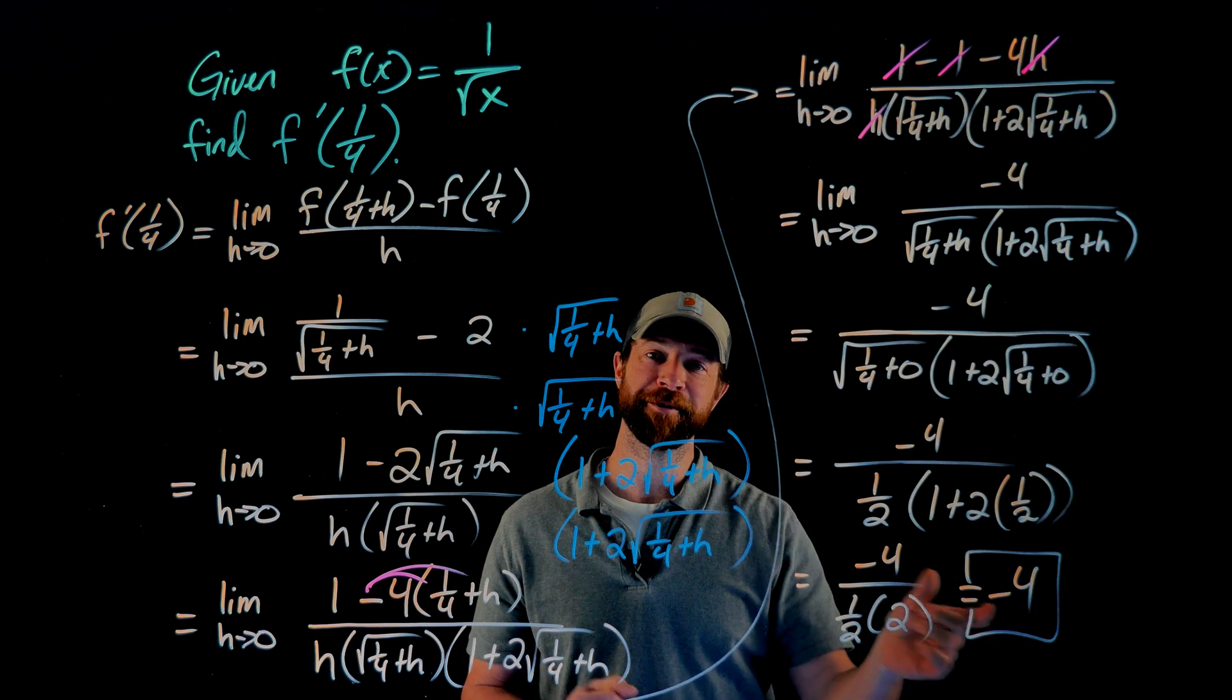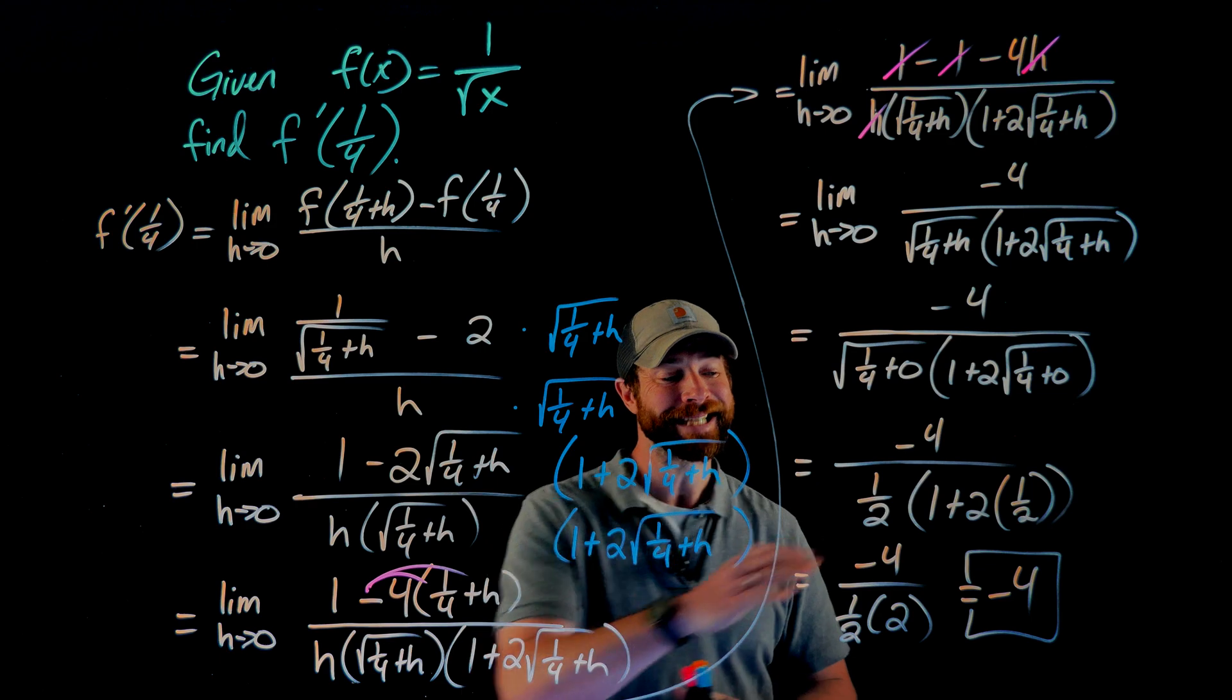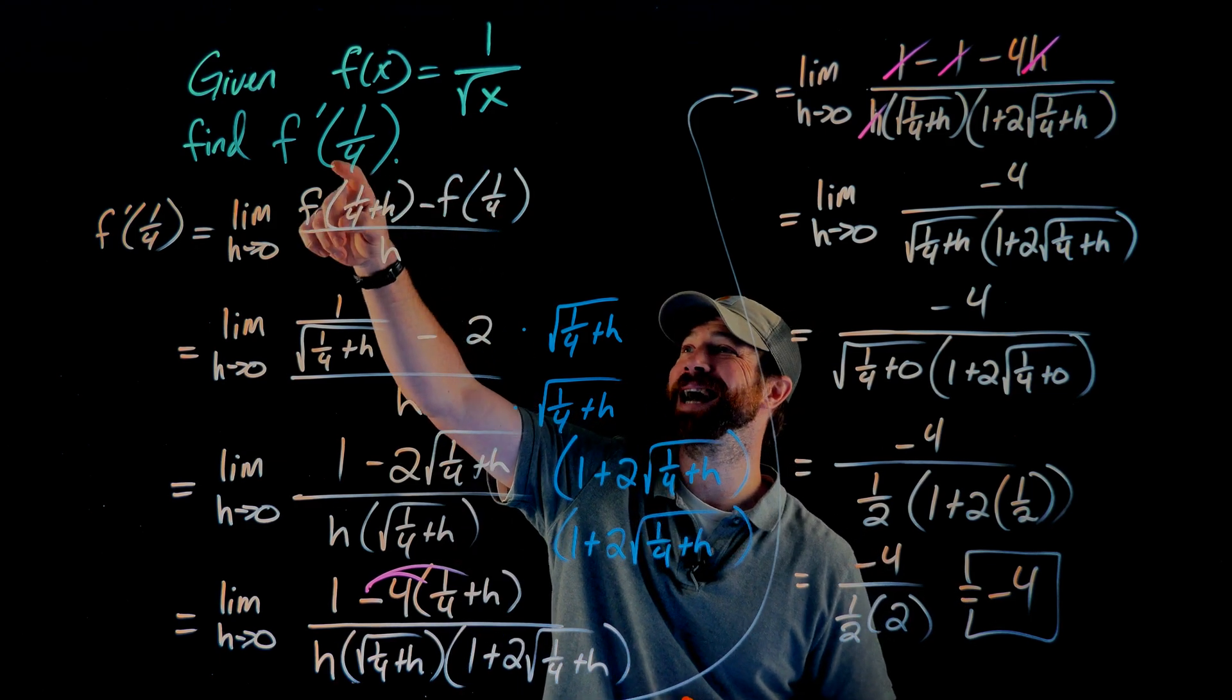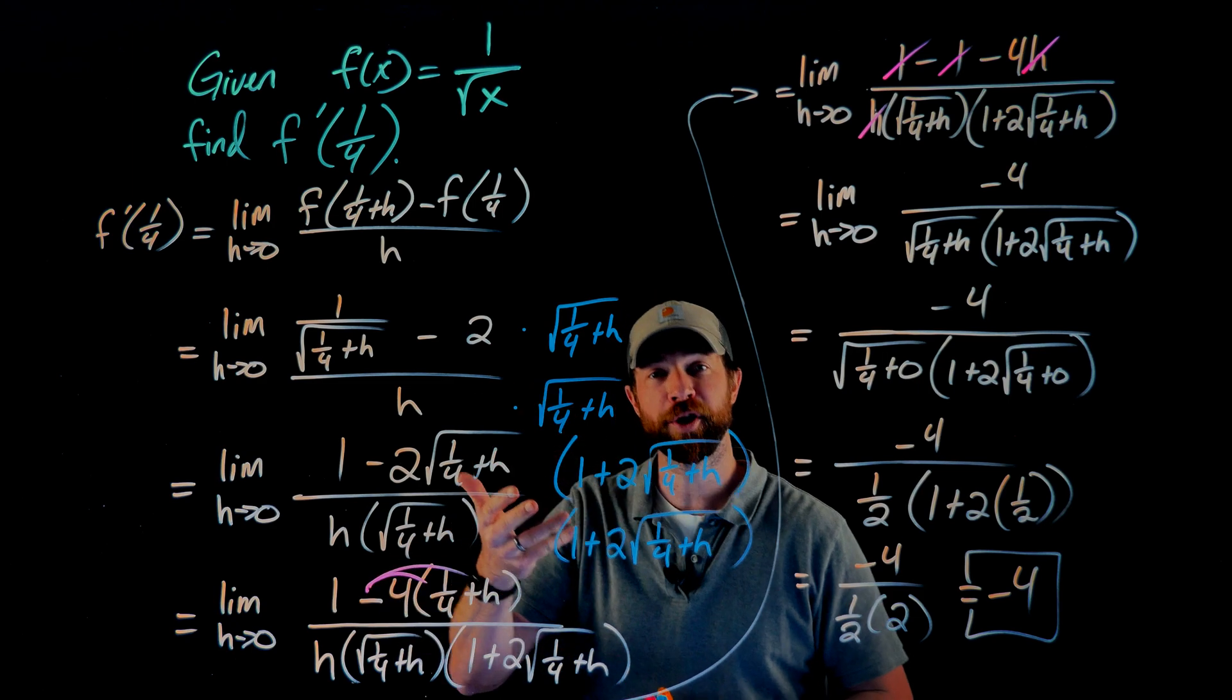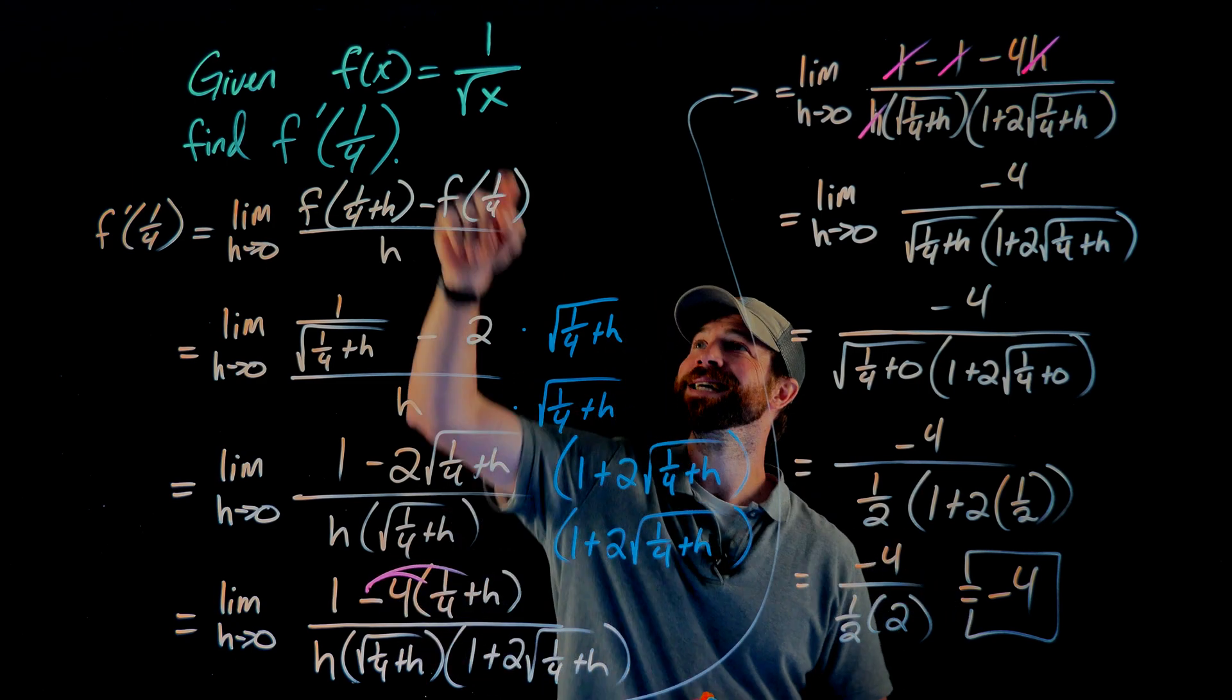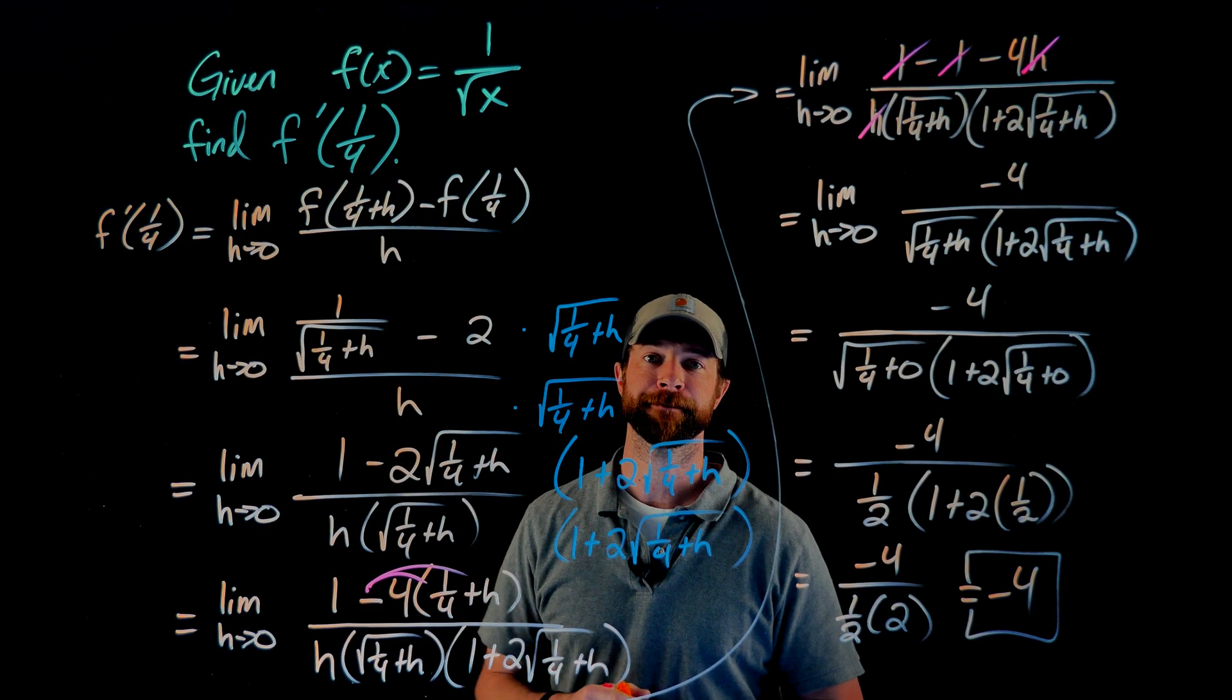Lastly, what this negative four means, getting lost in all this algebraic stuff, is that negative four is the rate of change of this function at x equals 1/4. Or in other words, graphically, this is the slope of the line tangent to this function at the x value of 1/4.